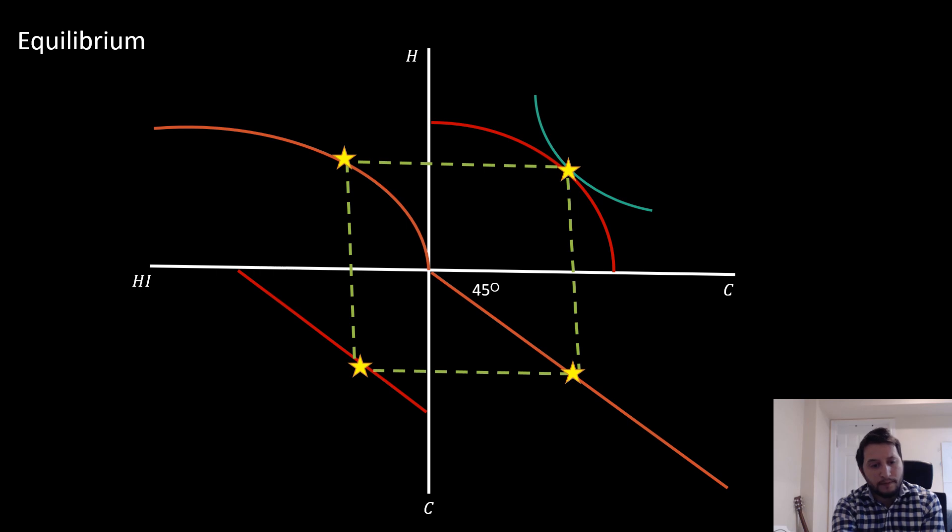In our third quadrant, we have our budget constraint, and that corresponds to a point on our production function there and a point on our 45-degree line. So we get this nice square here which indicates the type of equilibrium that we have.